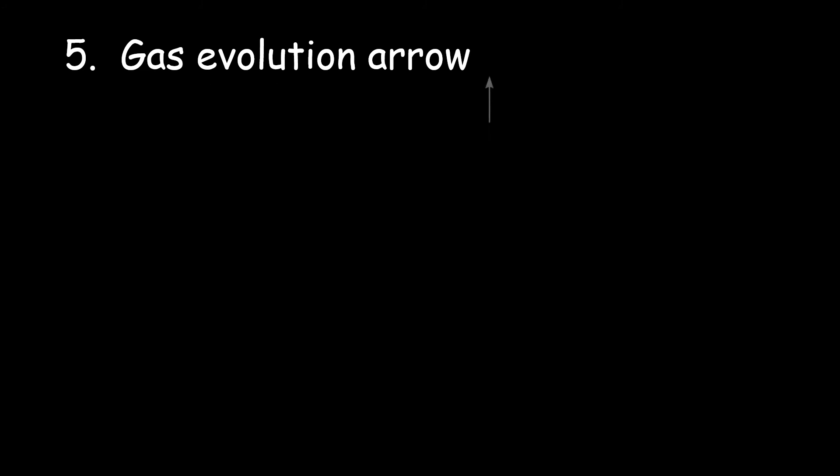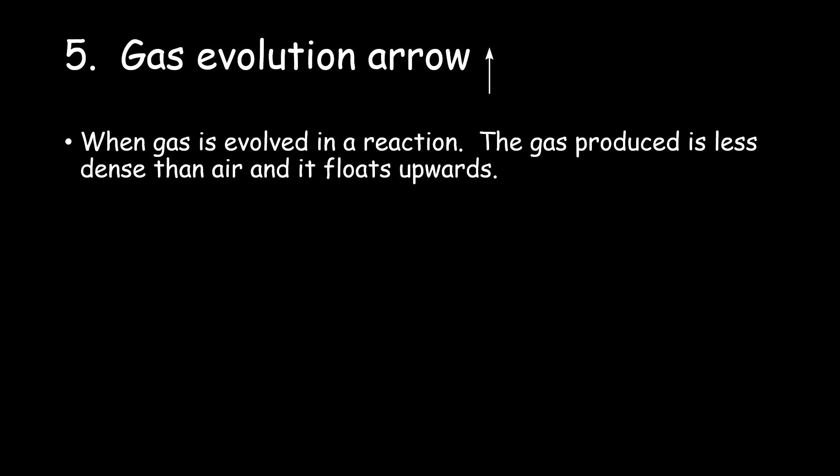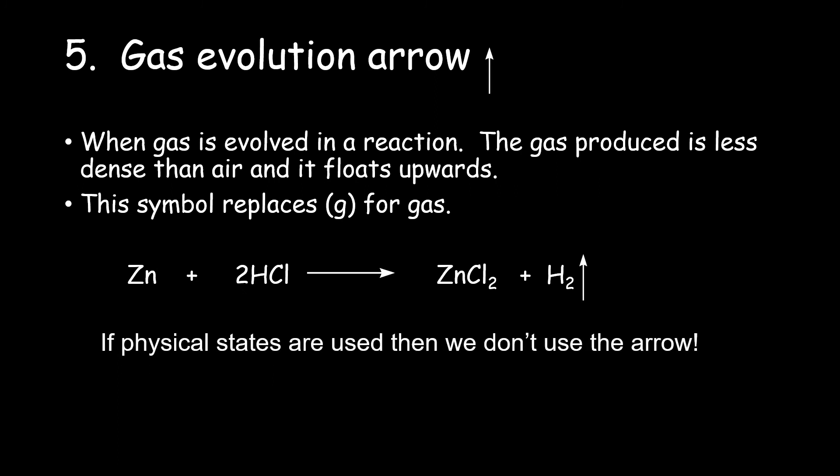Number 5. The gas evolution arrow. When gas is evolved in a reaction, the gas produced is less dense than air, and it floats up, hence the upward-pointing arrow. This symbol replaces G for gas. If physical states are indicated, then there is no need for this arrow.